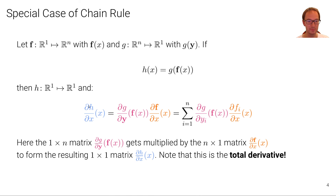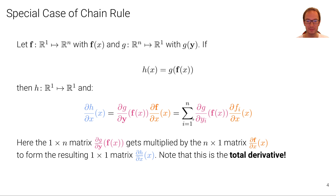The derivative of h with respect to x is again the derivative of g with respect to y — a scalar-valued function with respect to the vector y — times the derivative of the vector-valued function f with respect to the scalar x. Both of those are vectors: the first is a row vector (1×n matrix) and the second is a column vector (n×1 matrix), so we have an inner product. We can write this as the sum over i from 1 to n of the partial derivative of g with respect to y_i, evaluated at f(x), times the partial derivative of f_i with respect to x, evaluated at x — scalar quantities multiplied and summed to form the resulting 1×1 matrix.